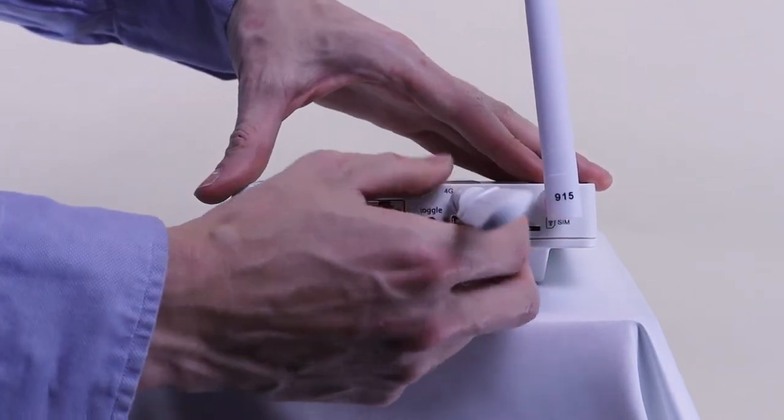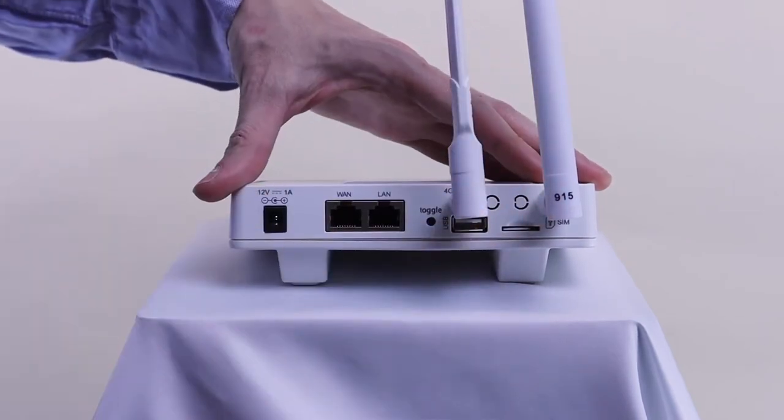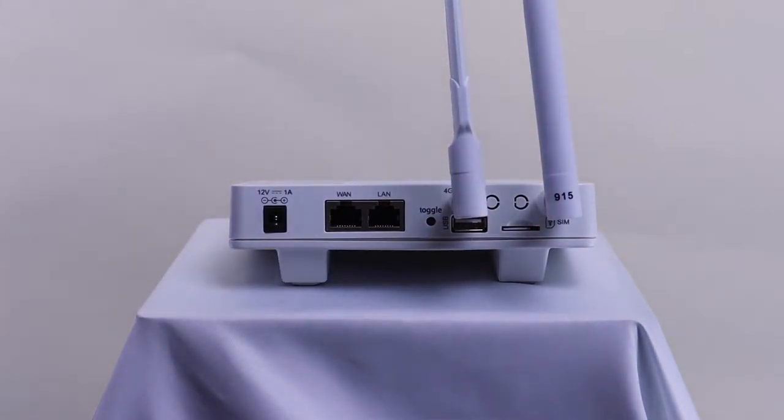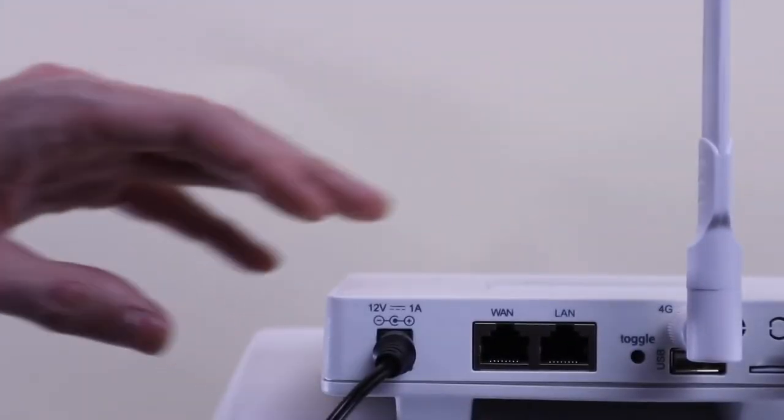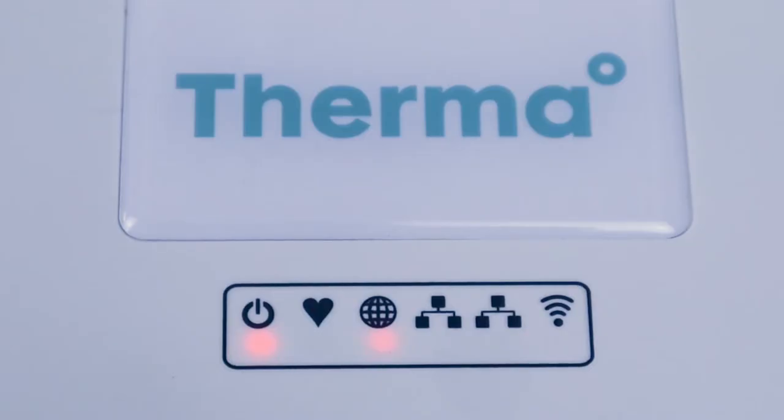This is how the hub communicates sensor data to the Therma dashboard and mobile app. Look for the corresponding labels on the hub. After you have connected the two antennas, simply plug the hub into any standard wall outlet and wait for it to come online. You will know that it's online when the power and globe icons are solid red.